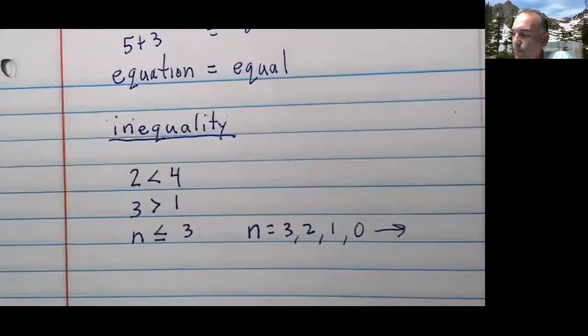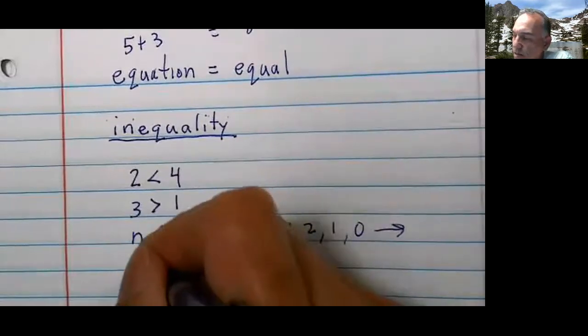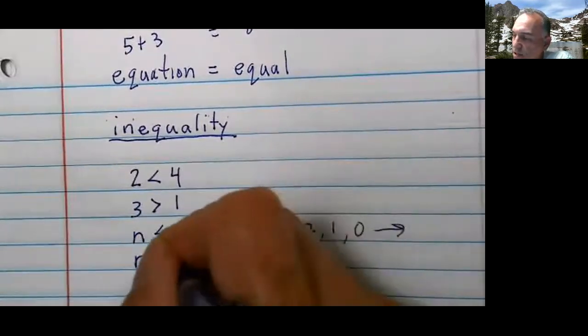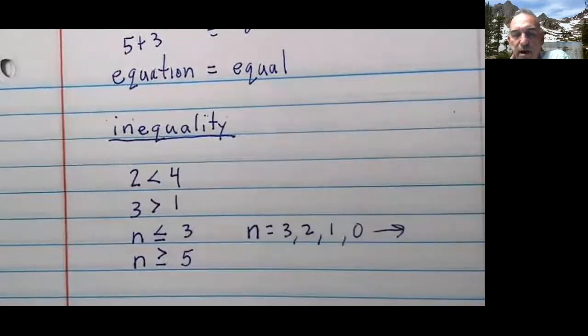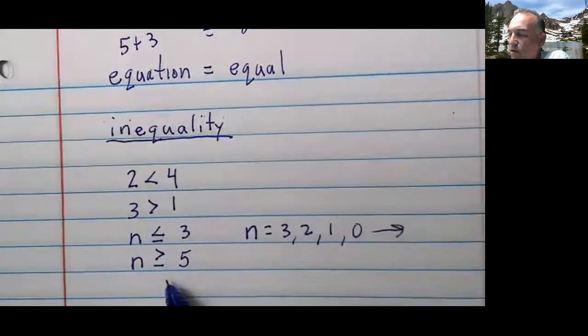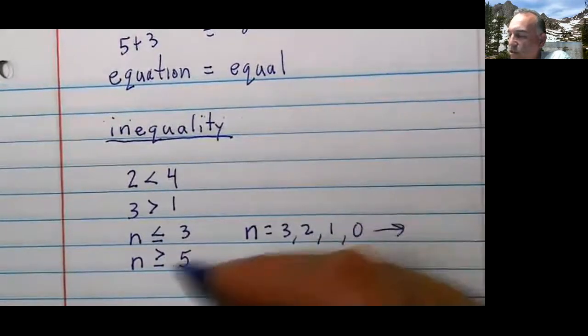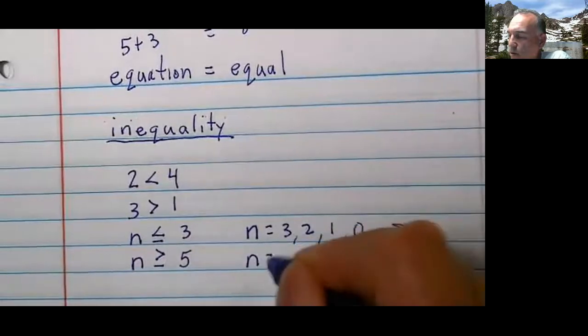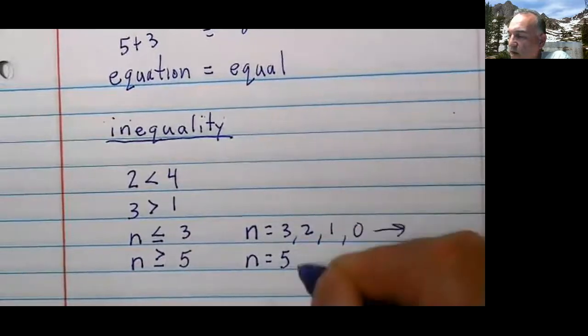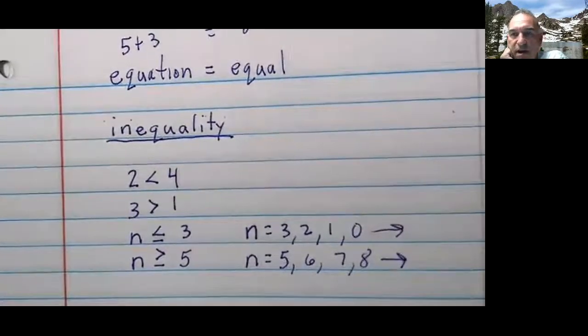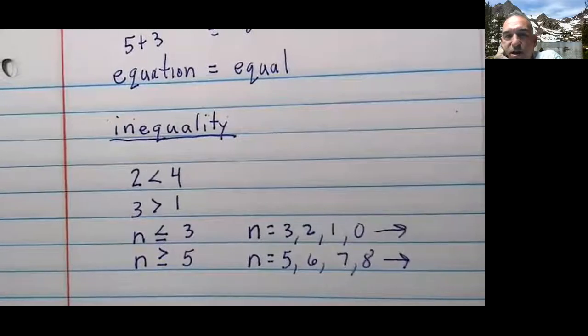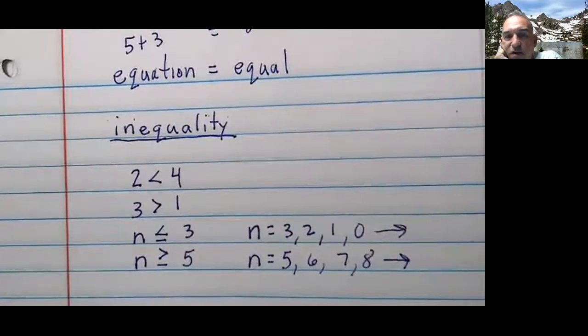How about the other way? How about this one? N is greater than or equal to 5. So what are the possible values? Well, N is greater than or equal to 5. So that could be 5, 6, 7, 8, and go on forever. Do you see how inequalities are different? Okay, so let's take a look.